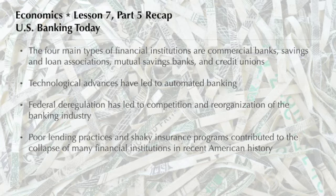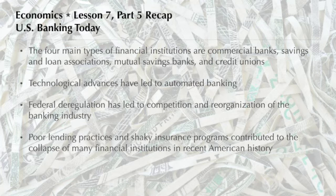So that's the way it is with Lesson 7, Part 5: U.S. Banking Today. At this point, you should know that the four main types of financial institutions are commercial banks, savings and loan associations, mutual savings banks, and credit unions. Technological advances have led to automated banking. Federal deregulation has led to competition and reorganization of the banking industry. And poor lending practices and shaky insurance programs contributed to the collapse of many financial institutions in recent American history.